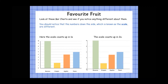And here the scale goes up in twos — in increments of two: two, four, six, eight, ten. What is interesting about going up in twos is that these are all even numbers. So if you had an odd number — for example, one, three, five, seven, or nine — how would we show that if there's no nine on the scale?